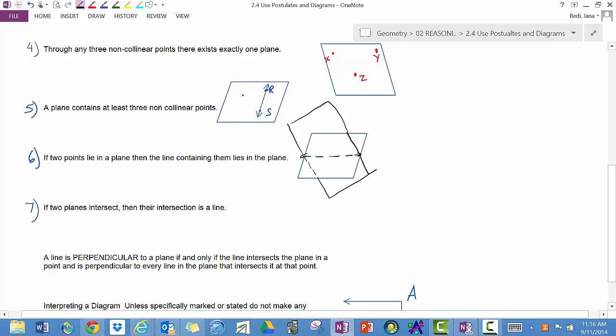If two planes intersect, then the intersection is a line. You can use the same sketch as in number 6. The difference between number 6 and number 7 is in what is in the given or whatever is in the hypothesis.